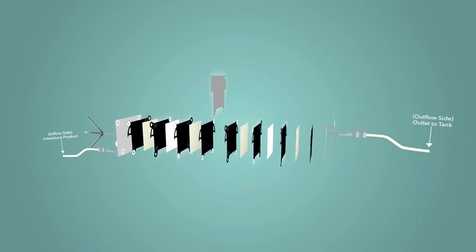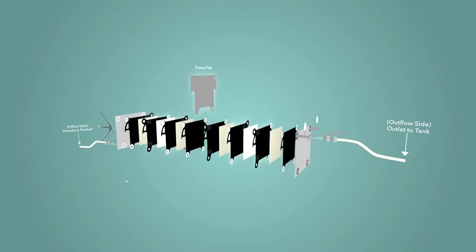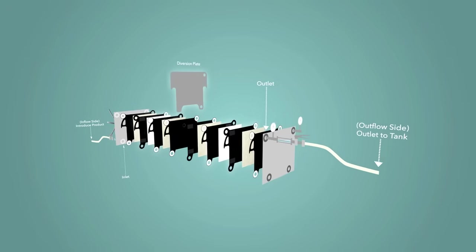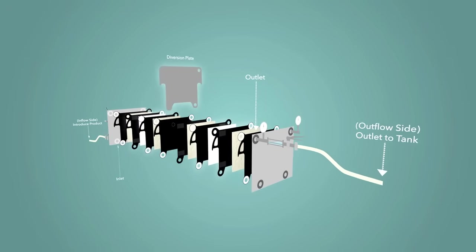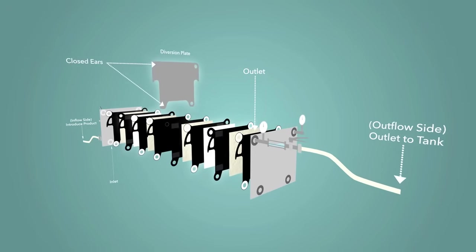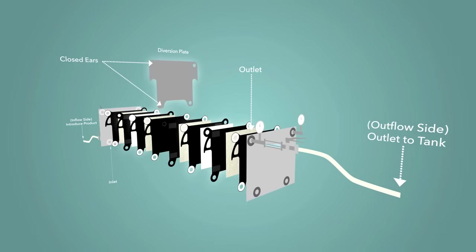If a diversion plate is not used, wine would simply enter through the inlet and exit through the outlet without filtering. Thus, when inserting the diversion plate, the closed ears must be placed on the inlet and outlet side of the filter.